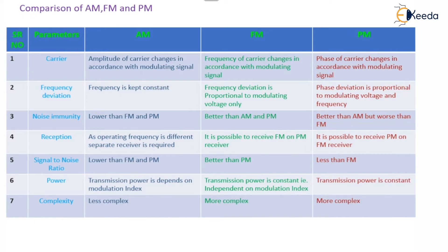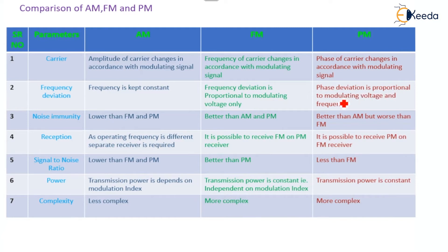Regarding frequency deviation: in Amplitude Modulation, no frequency variation takes place and frequency is kept constant. In Frequency Modulation, frequency deviation is proportional to the modulating voltage only. But in Phase Modulation, phase deviation is proportional to both the modulating voltage and the frequency.